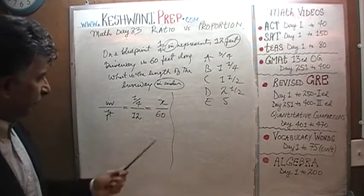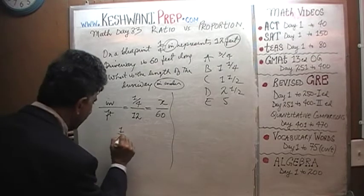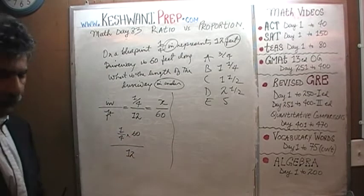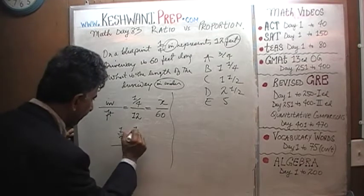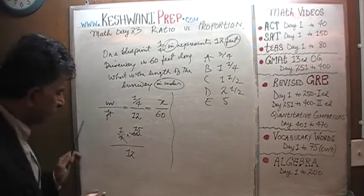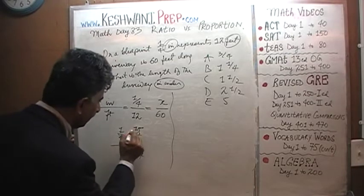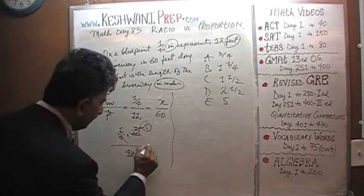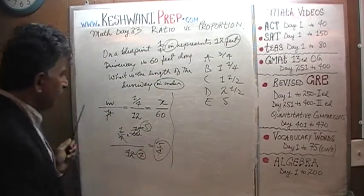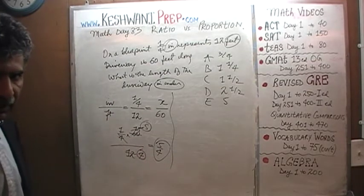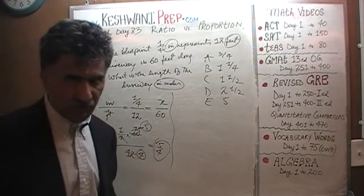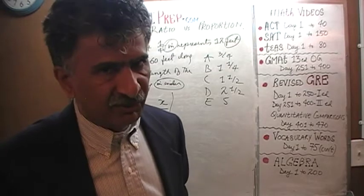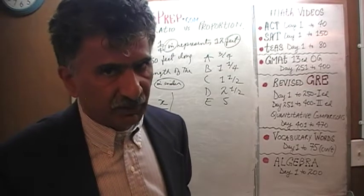Setting it up as a proportion: x equals one quarter times 60 over 12. One quarter of 60 is 15, and 15 divided by 12 — divide top and bottom by 3 — gives you 5 over 4, which is 5 fourths. The answer is 5 fourths. But as you can see, this is a very academic way and takes a lot of time. In an exam you want to keep moving — even a few seconds count.